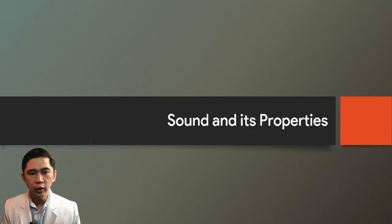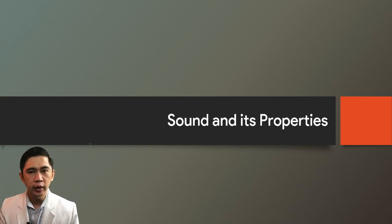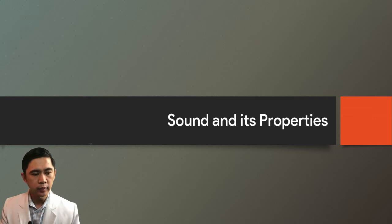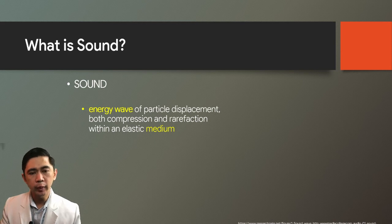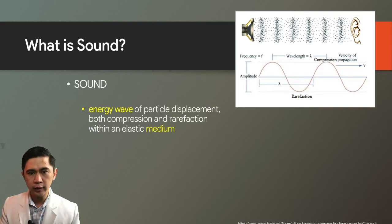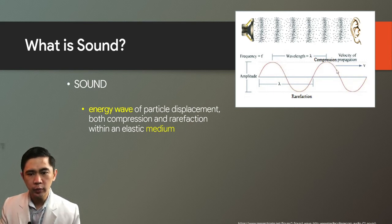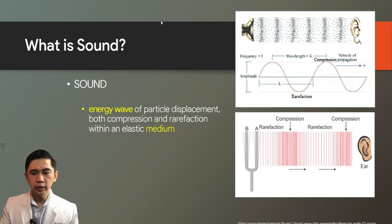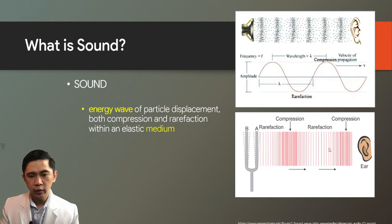Here we will do a review of the physics of sound and its properties, which is very helpful in understanding auditory mechanisms. Sound is an energy wave of particle displacement—both compression and rarefaction—within an elastic medium. Looking at this image, we have a sound source producing energy which travels through air, displacing molecules that reach our ears. This displacement can be plotted as a wave, with the vertical axis representing amplitude or intensity and the x-axis representing time. A tuning fork also sets out a sound wave with both compression and rarefaction, which triggers the sensation of hearing.